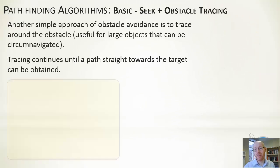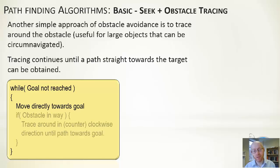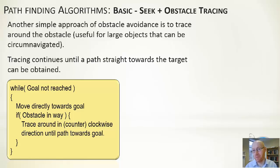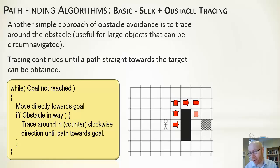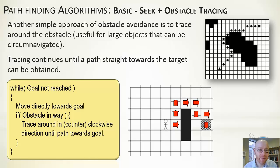A small extension is seek with obstacle tracing. Here, whilst the goal isn't reached we move directly toward it. If blocked, we don't randomly try left or right — instead we trace around that obstacle and keep moving around it until hopefully we get past and can then seek toward our target again. For example, going up to a wall, we'd go left, walk around the wall, then head to our goal. It works well in largely open environments even with sizable objects.